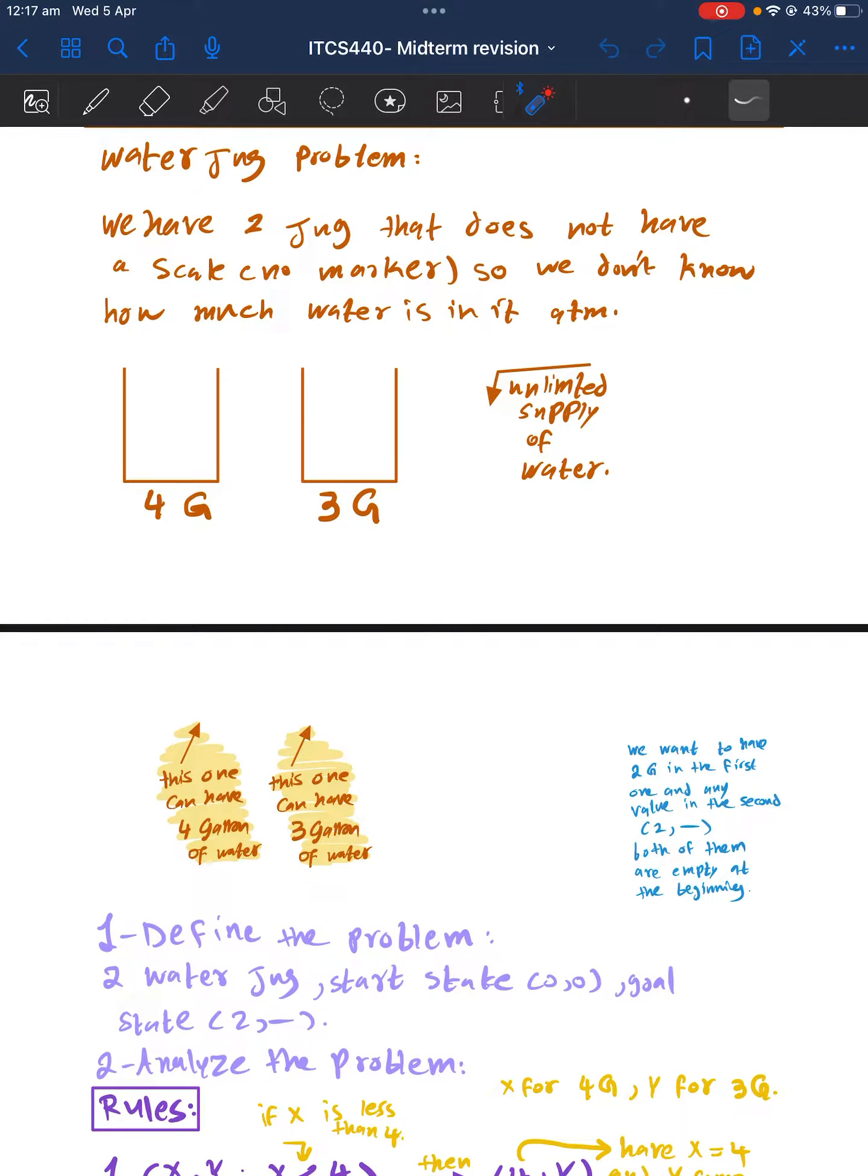By doing that, we will go to the second step, which is analyzing the problem. So we will set rules. We will give a variable for each jug, so we will set variable X for the first jug and Y for the second one.